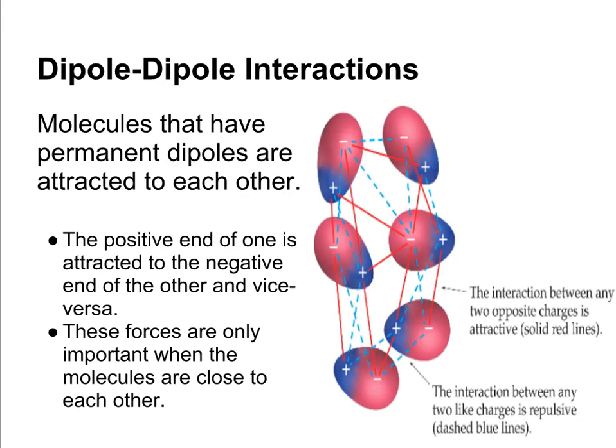The next type is dipole-dipole interactions. Molecules that are polar and have a permanent dipole are going to be attracted to each other. In a molecule that has a dipole, one end is slightly positive and one end is slightly negative due to an uneven electron density. Those partial charges are going to be attracted to each other — the positive end of one molecule is attracted to the negative end of another. These forces are important when molecules are close to each other, so they won't apply much in gases, but in the condensed phases like solids and liquids, dipole-dipole interactions are going to matter.